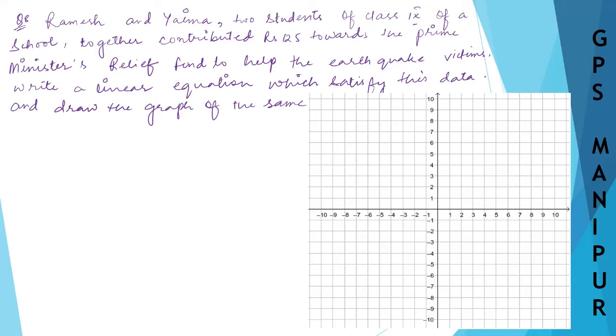Ramesh and Yaima, two students of class 9 of a school, together contributed rupees 125 towards the Prime Minister's Relief Fund to help the earthquake victims. Write a linear equation which satisfies this data and draw the graph of the same.